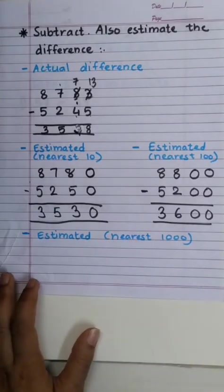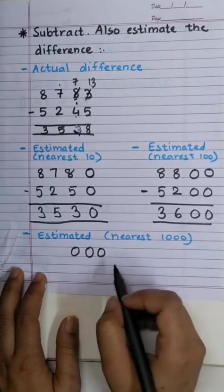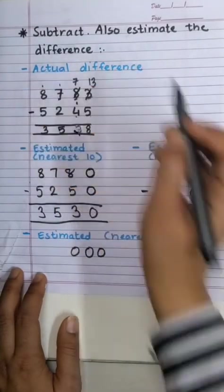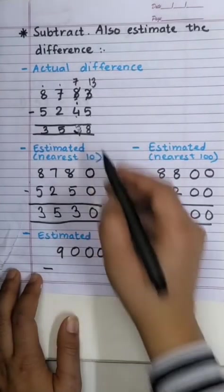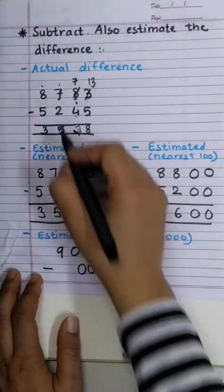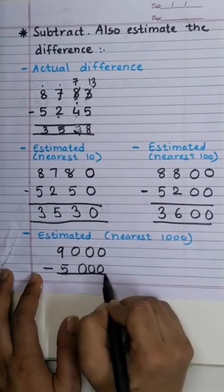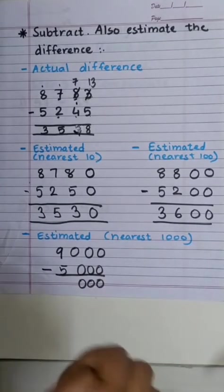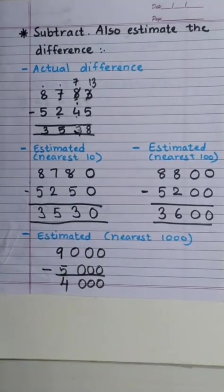Now, estimate to the nearest 1,000. Last three digits will be 0. We will observe this digit. It is bigger than 5. So, we will add 1 to the digit before it. Which makes it 9. Minus. Last three digits 0. We will observe this. Smaller than 5. We will copy the other digit as it is. The answer is 9 minus 5: 6, 7, 8, 9. So, answer is 4,000. Which is again close to 3,538.